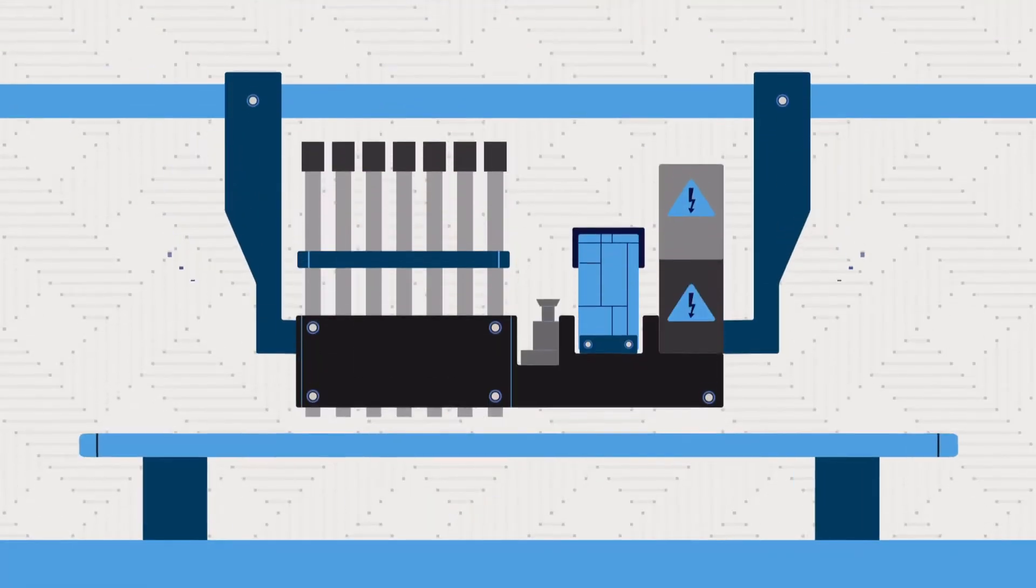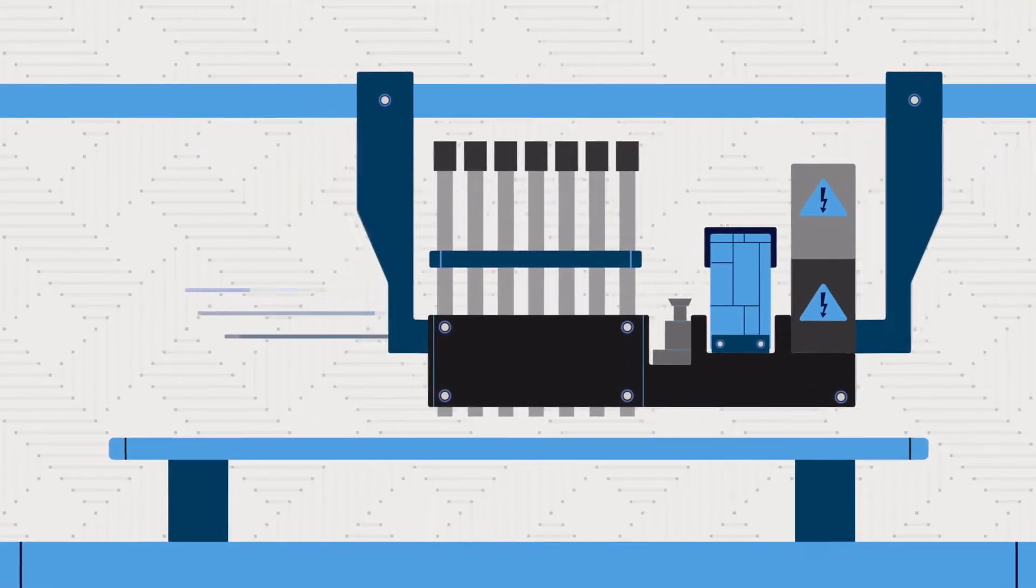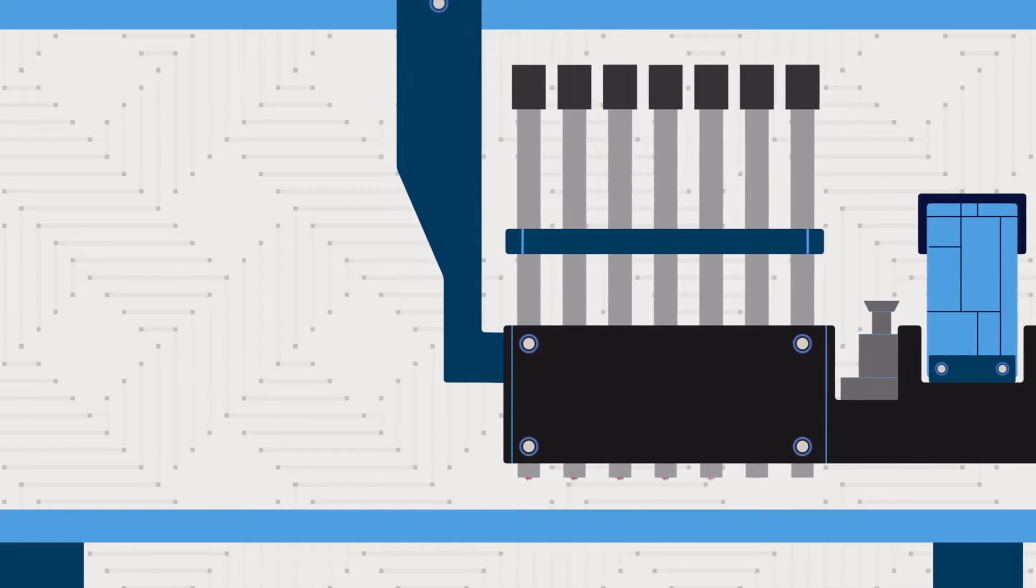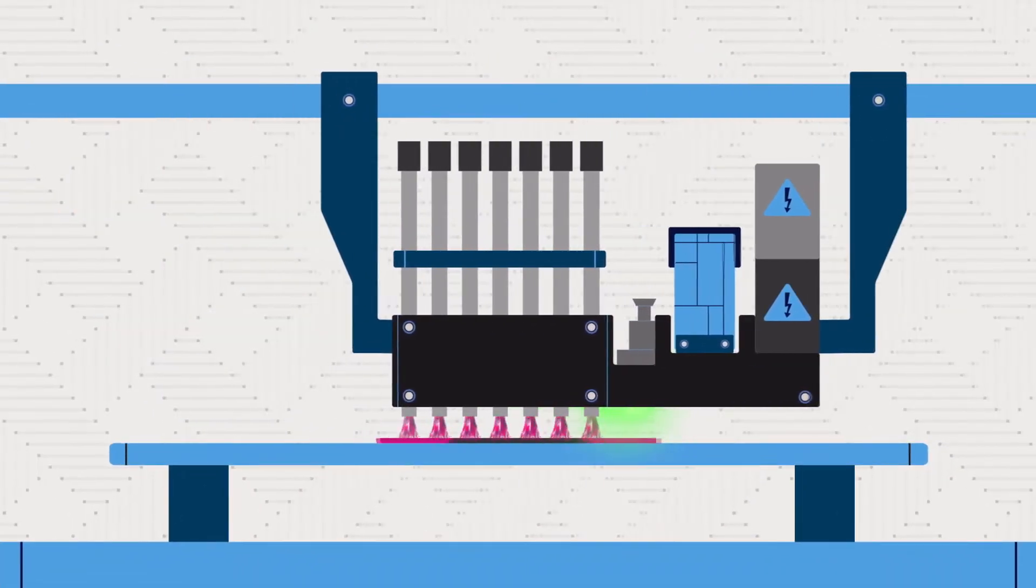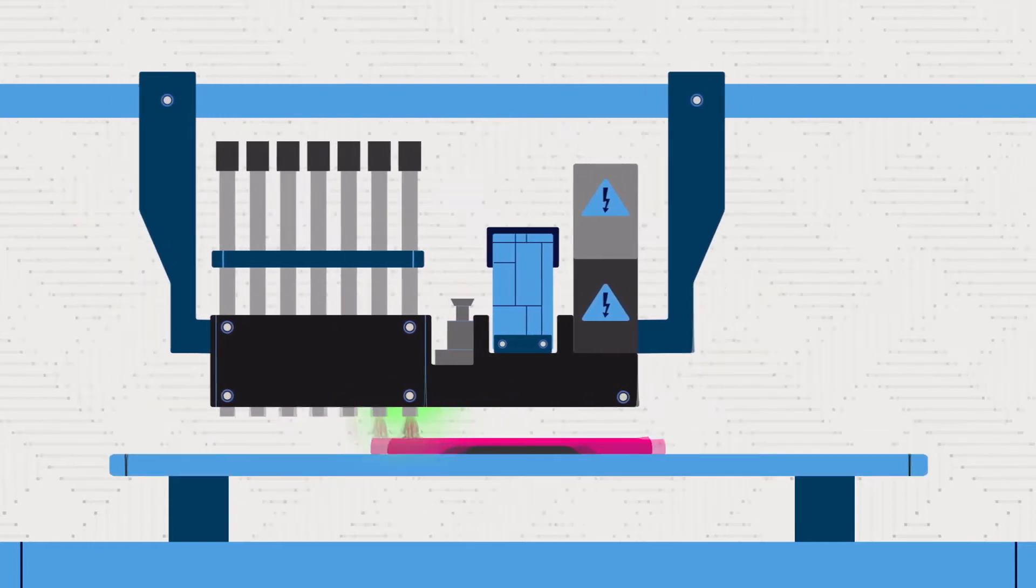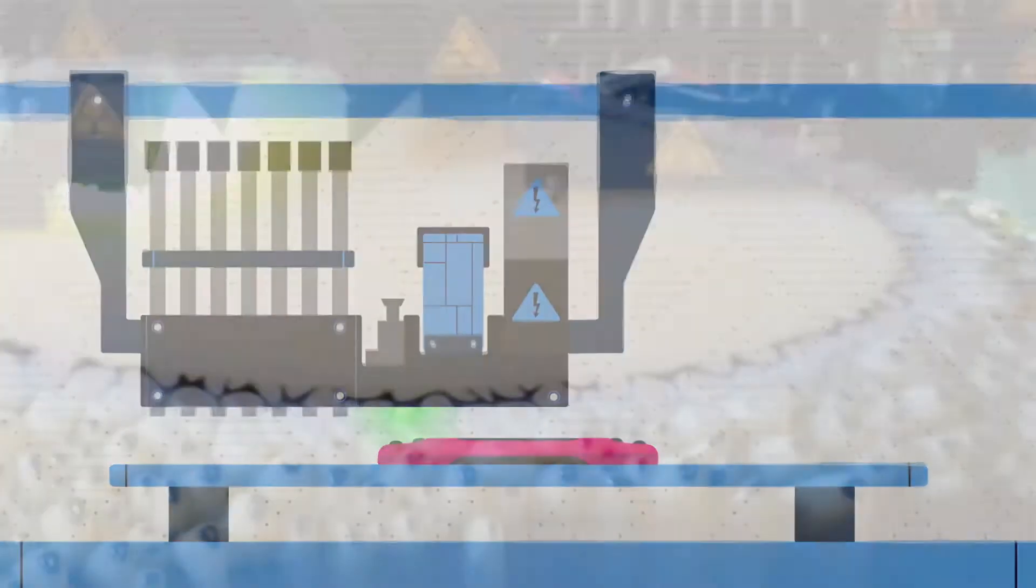PolyJet is a powerful 3D printing technology that produces smooth, accurate parts with a huge variety of materials and colors. It works similarly to inkjet printing, but instead of jetting drops of ink onto paper, PolyJet 3D printers jet layers of curable liquid photopolymer onto a build tray.